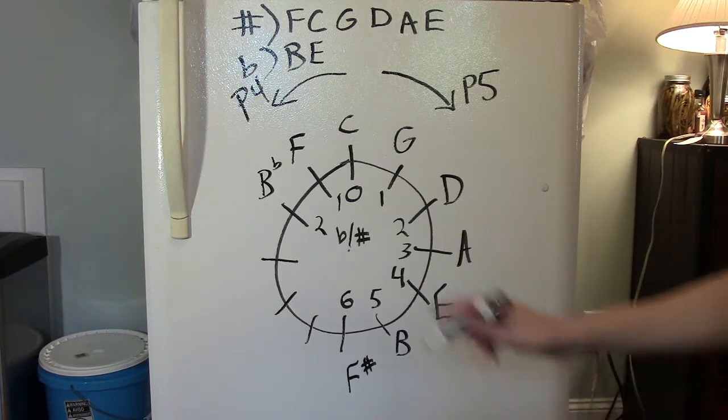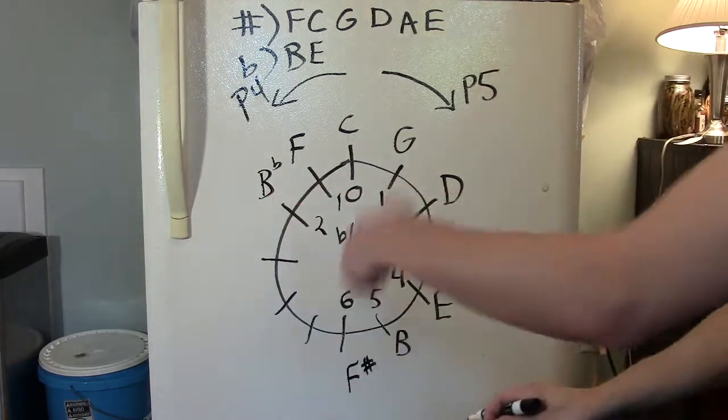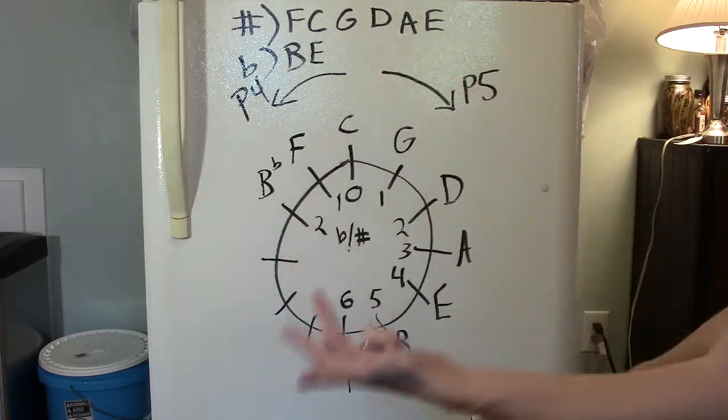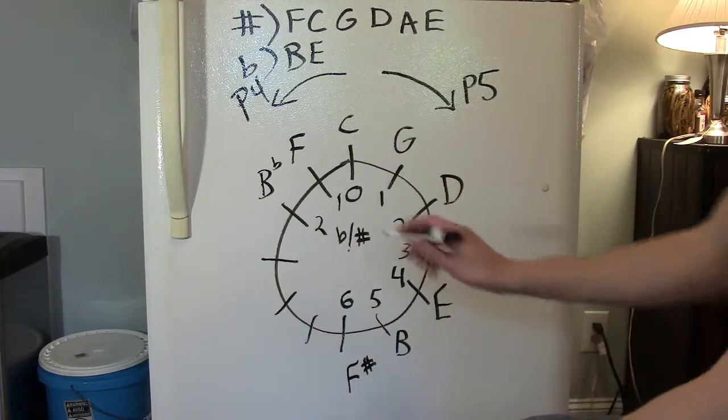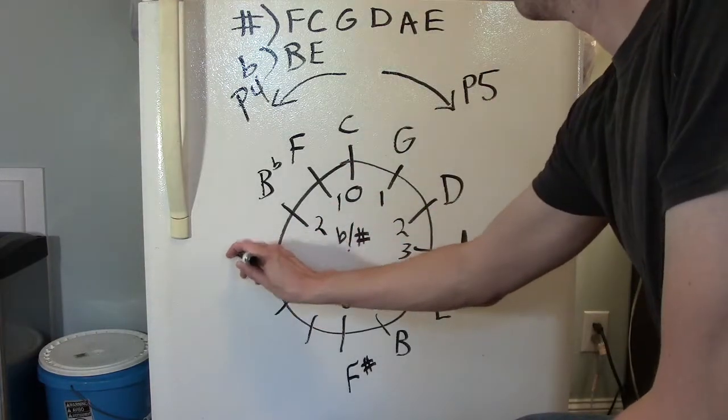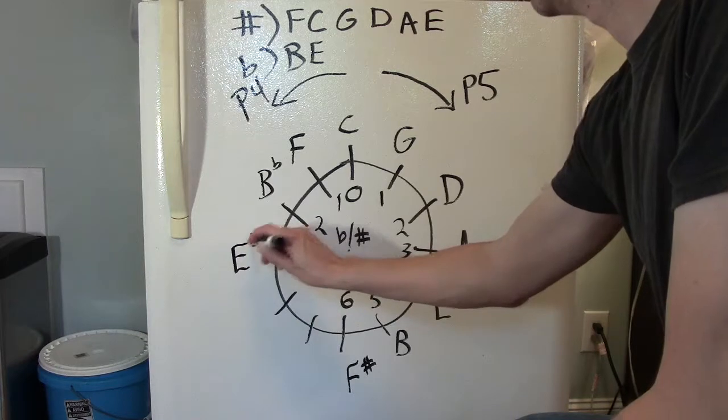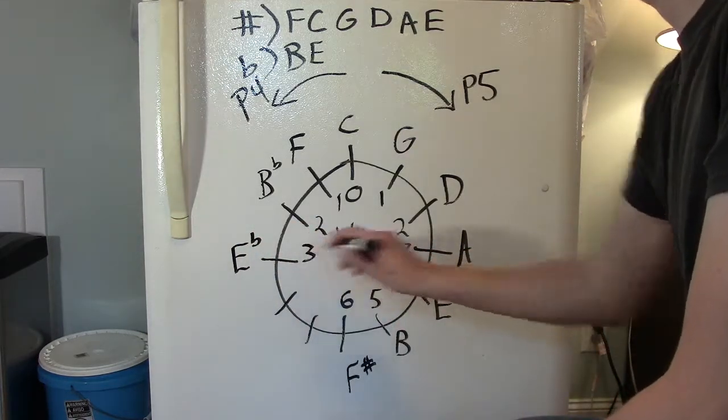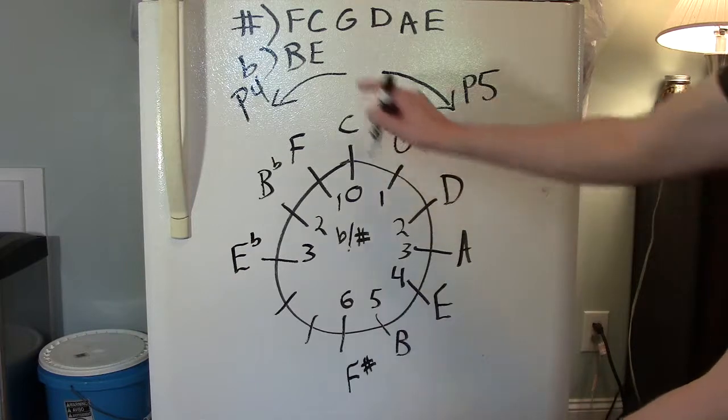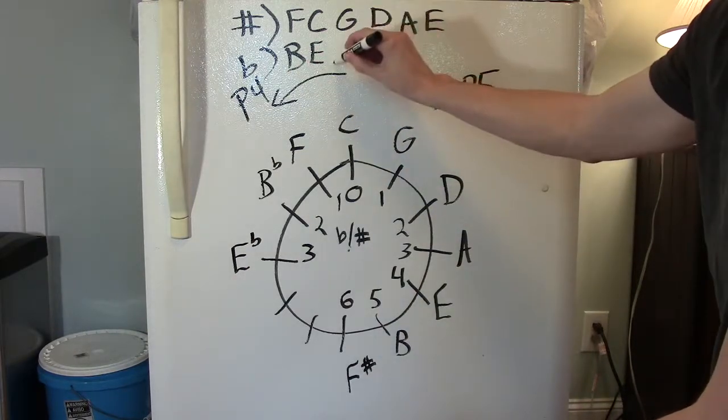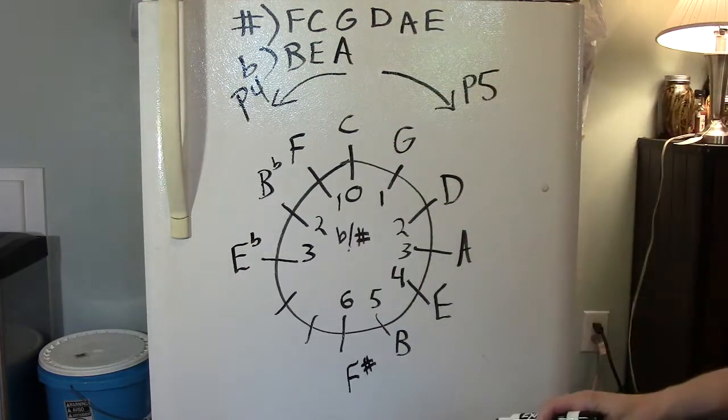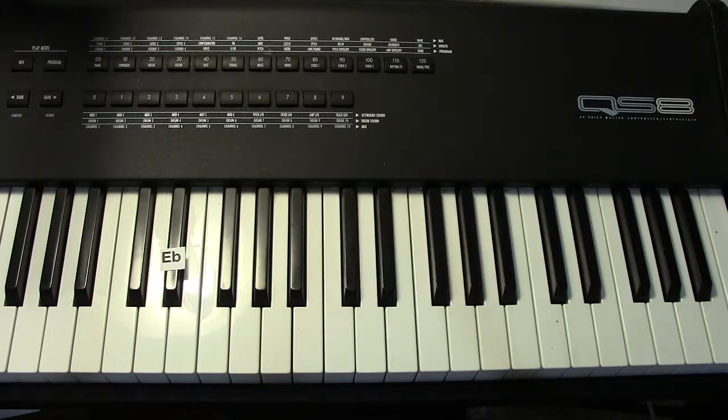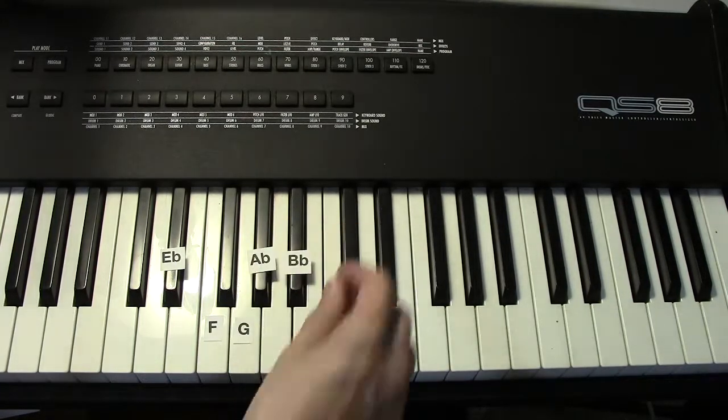And let's continue our climb of perfect fourths. B flat, C, D, E flat. The key of E flat major has three flats. Those flats are B flat, E flat, and A flat.